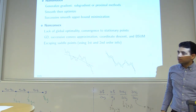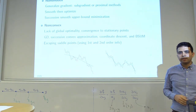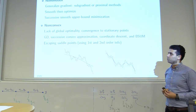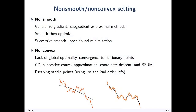For non-smooth or non-convex functions: for non-smooth functions, we can use generalizations of gradients — sub-gradient definitions or proximal methods. Another approach is to smooth the function locally around singularity points and then optimize the smooth version.